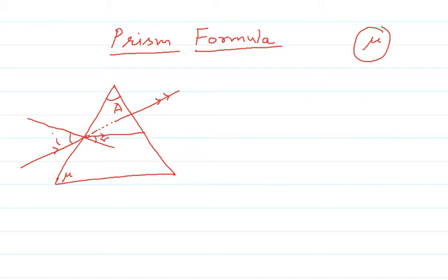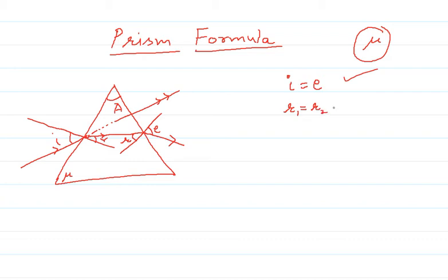We have this angle, this angle, and then the normal again. We are talking about minimum deviation, so the two angles R1 and R2 are the same. This is our emergent angle E. When we have minimum deviation in the prism, the conditions are: i is equal to E, and R1 is equal to R2, which we call R.